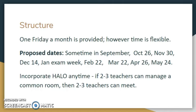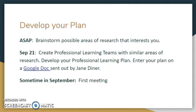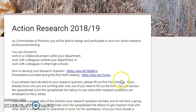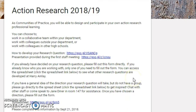You can also use Halo if you'd like. If two to three teachers can manage a common room, that might free up two to three other teachers so they can meet at that time as well. You have the month of September to brainstorm possible areas of research. If you can, by September 21st develop your professional learning team and enter the information on the Google Doc I'm going to show you. Here is the Google Doc that you will fill out once you've developed your plan.